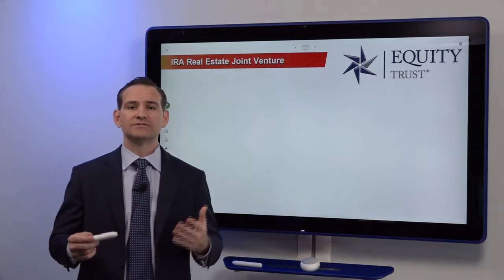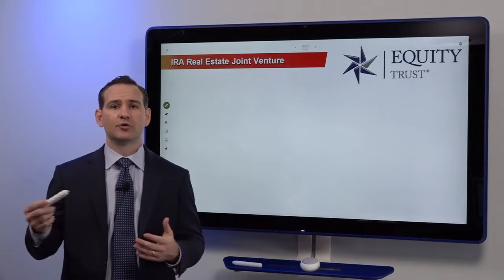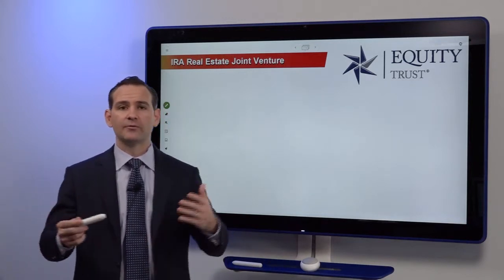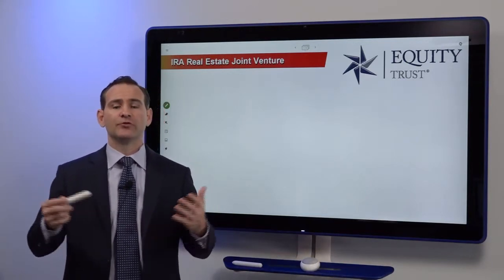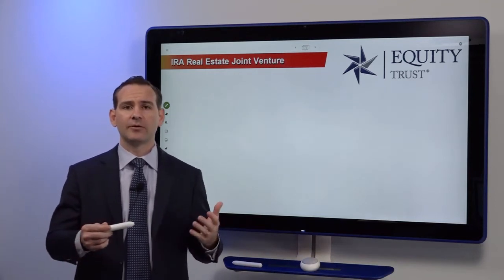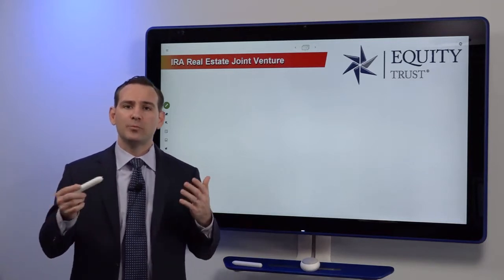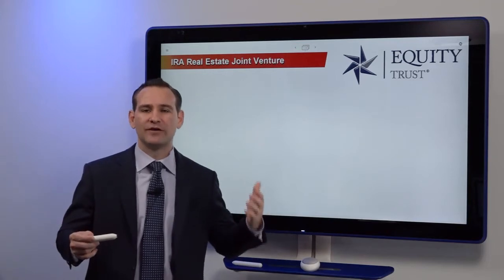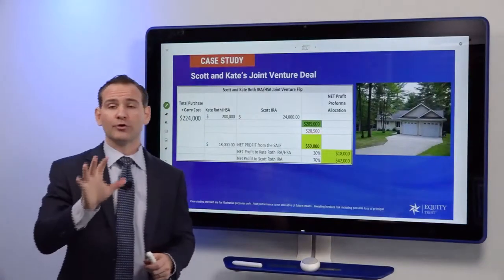In the last segment, we talked about partnering multiple disqualified persons to one another — such as your IRA with your non-IRA money, your Roth IRA with your traditional IRA, or maybe your IRA with a spouse's IRA. With those disqualified persons partnering together, you have to make sure that all income and all expenses flow proportionate to the capital contribution. But what if you partner your IRA funds with a non-disqualified person? Let me share what that looks like in a real-world context.